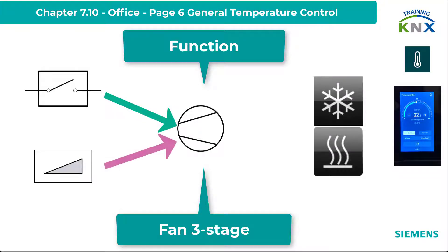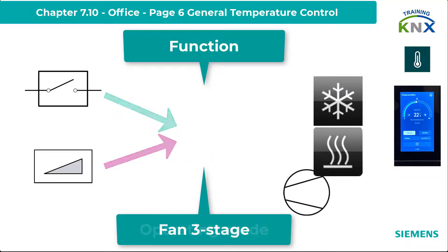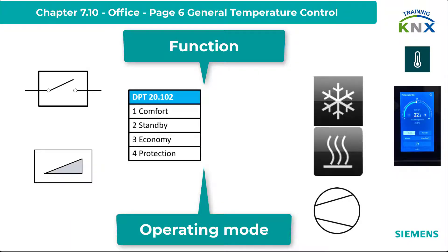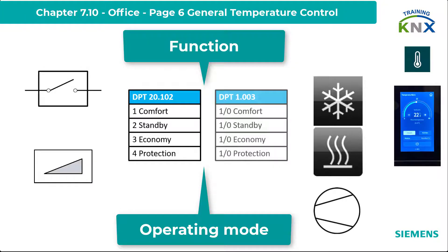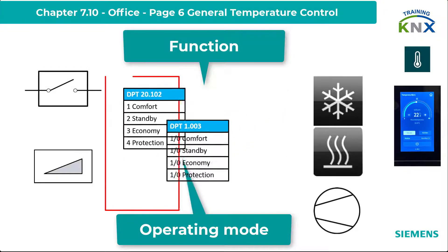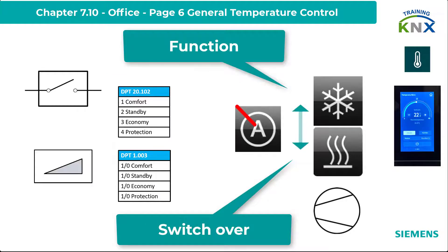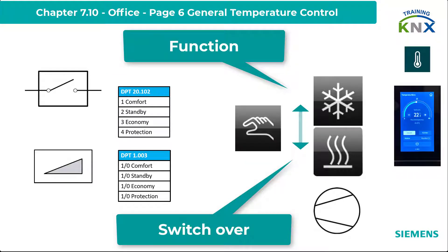The operating mode can be set via the 1-byte object DPT 20.102 as well as via the 4x1-bit objects for the four operating modes, which were used more frequently in the past. Automatic switching between heating and cooling mode is not available; this must be done manually by the user at the panel or via the corresponding object control mode externally.